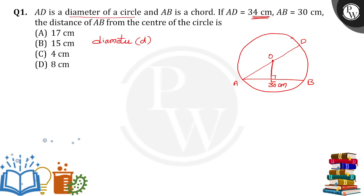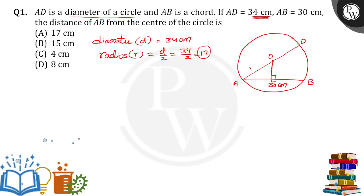Diameter D is equal to 34 cm. Then what about the radius? Radius R is equal to D divided by 2, we get 34 by 2, which is 17 cm. So here OA is equal to 17 cm, since it's a radius.